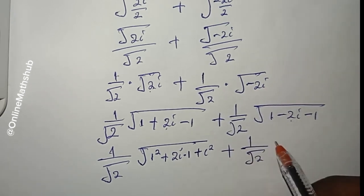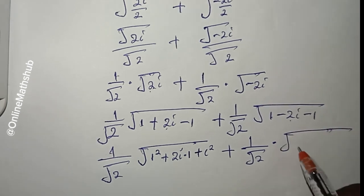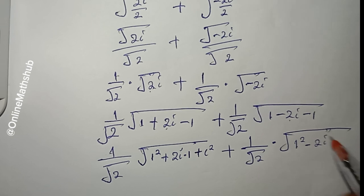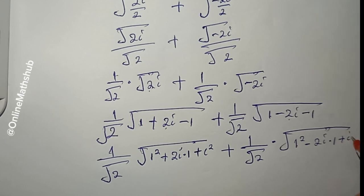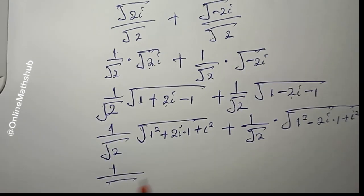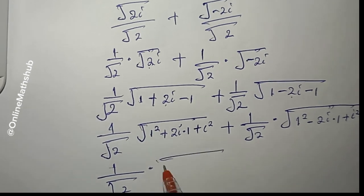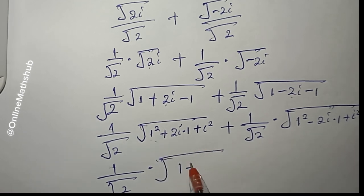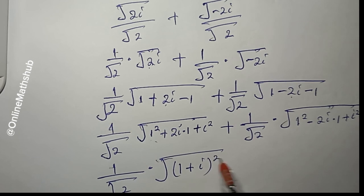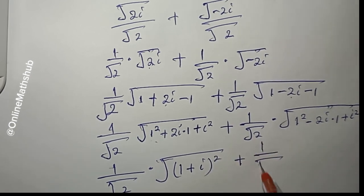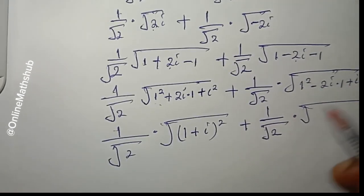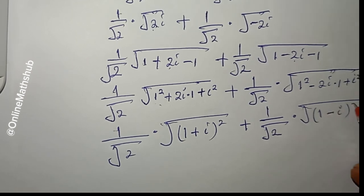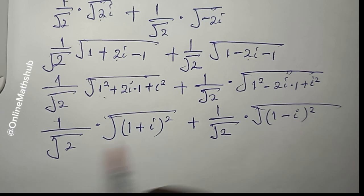Now looking at the expression inside the square root, I can recognize it as (1 + i)² on the first side, giving (1/√2) times √((1+i)²). Similarly on the other side, I can write the expression as (1 - i)², giving (1/√2) times √((1-i)²).